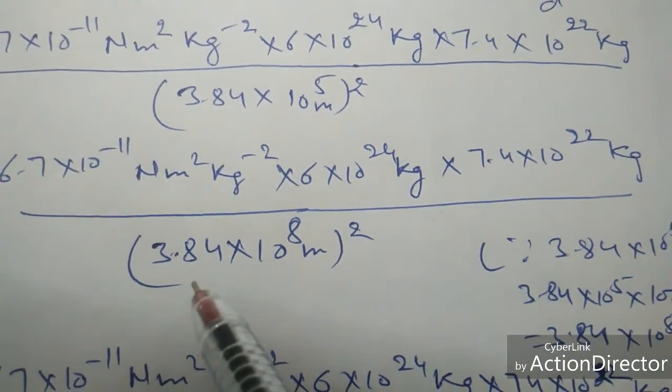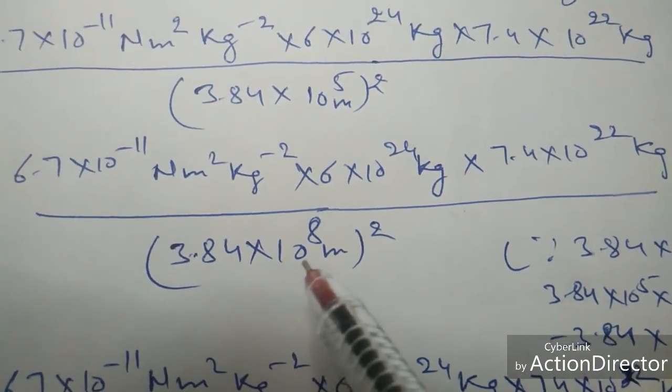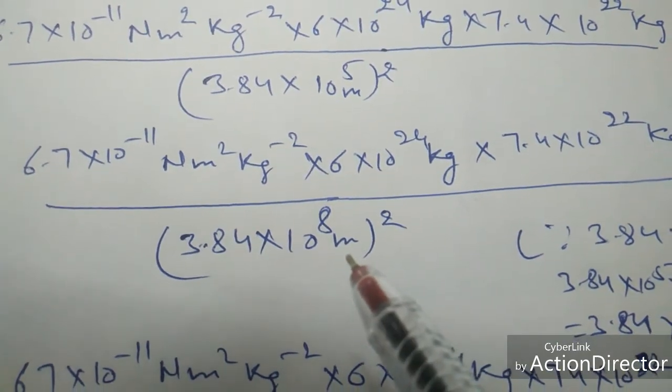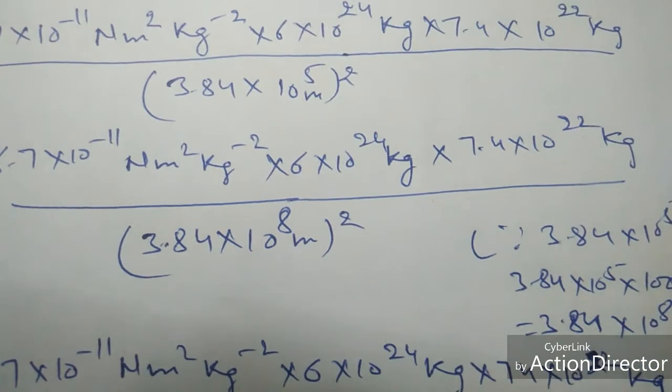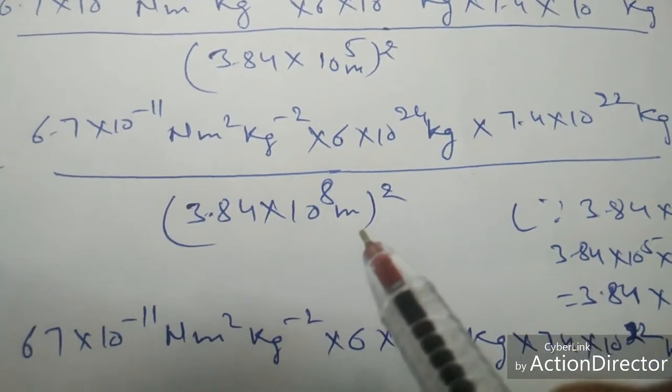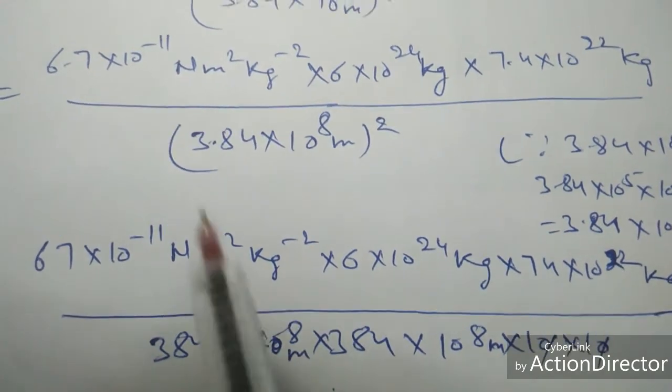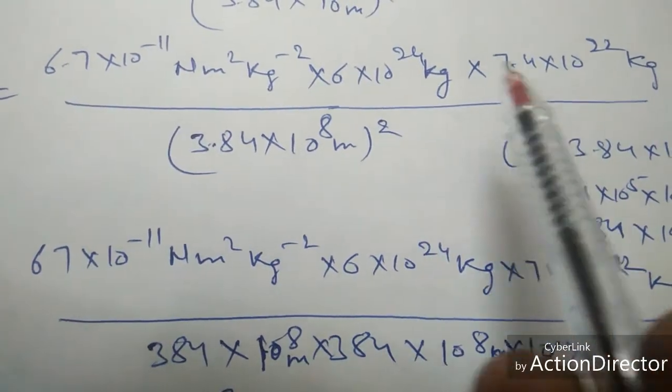So I have written this here, 3.84 × 10⁸ meters squared. I have written this value after converting the kilometers into meters. Further solving it.